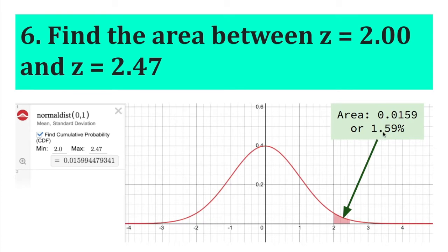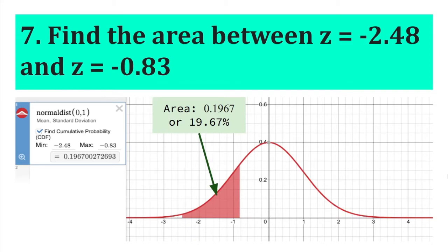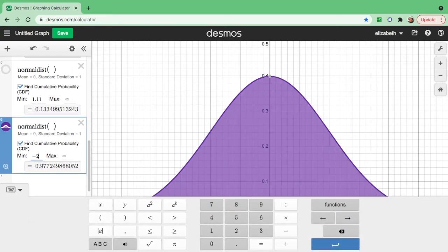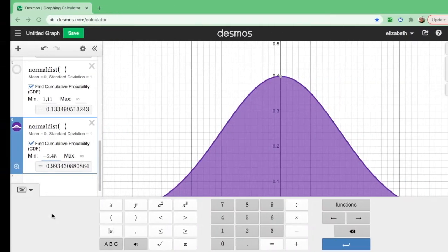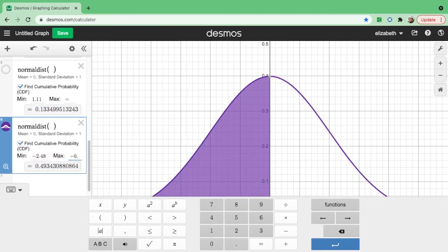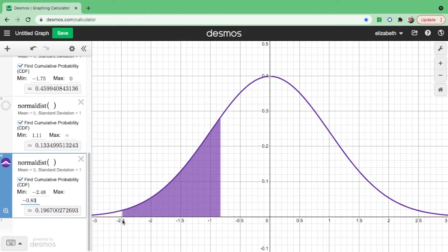Find the area between negative 2.48 and negative 0.83. The minimum value must always be less than the maximum, and negative 2.48 is less than negative 0.83. So set negative 2.48 as the minimum and negative 0.83 as the maximum. Copy to four decimal places. The area between negative 2.48 and negative 0.83 is 19.67%.